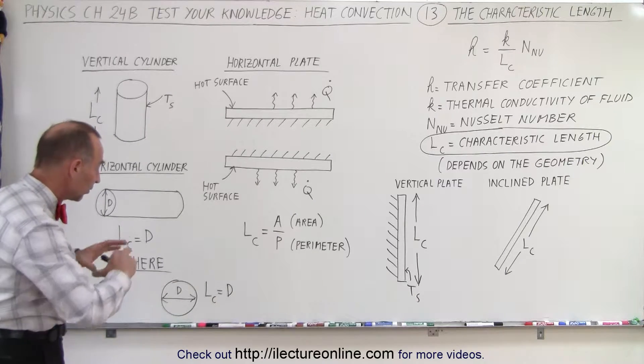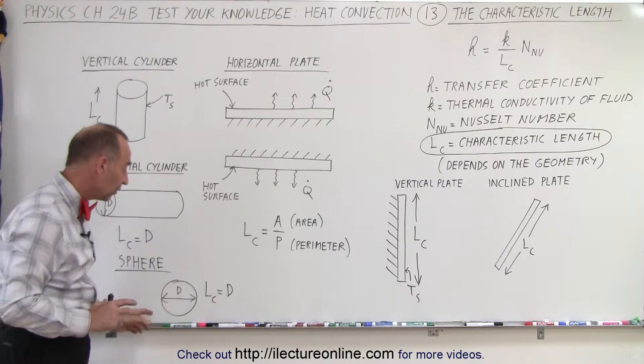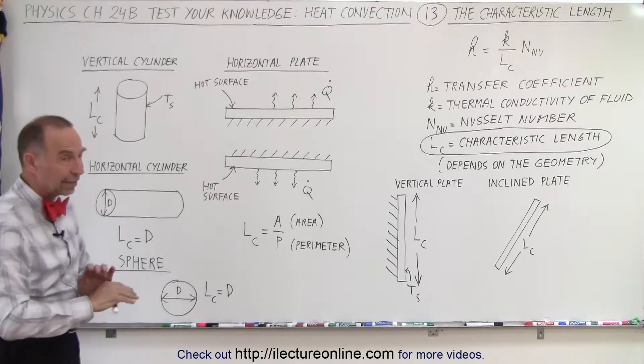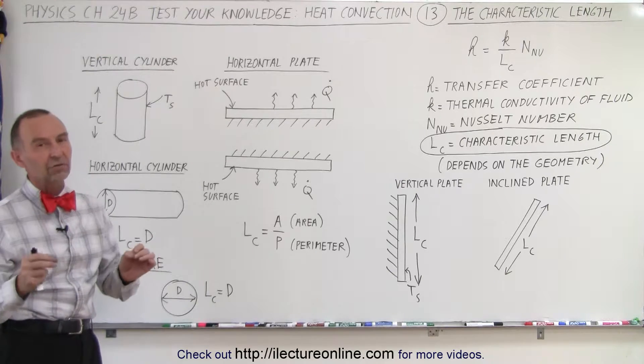For a sphere, here you can see that if air is flowing over the sphere, that the diameter of the sphere is also considered the characteristic length. Again, these are not hard values, not accurate values.